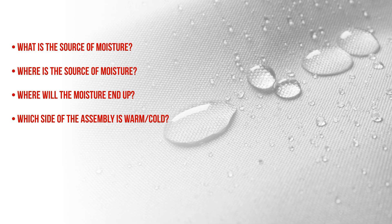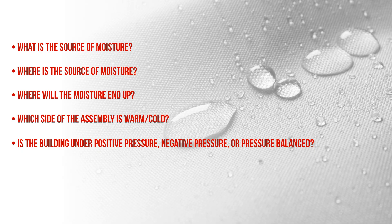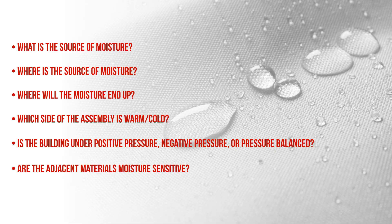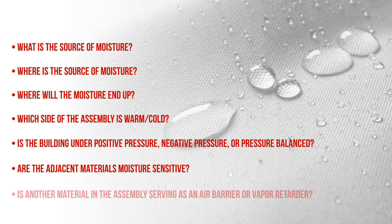This gets even more complicated if moisture is moving in different directions throughout the year. Is the building under positive or negative pressure, or pressure balanced? A building under negative pressure with exhaust-only ventilation will draw air in through leaks from the exterior, while a positively pressurized building pushes air out. Are the adjacent materials moisture sensitive — wood or steel framing, gypsum or wood sheathing? Is another material in the assembly already serving as an air barrier or vapor retarder? This is a big consideration to avoid a double vapor barrier scenario, where moisture trapped in the assembly can't dry out.